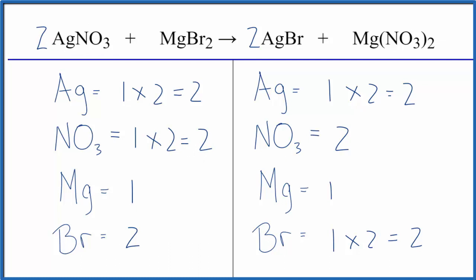This equation is balanced. By counting this polyatomic ion, this nitrate ion, as one item, because it appears here and here, that greatly simplifies balancing the equation.